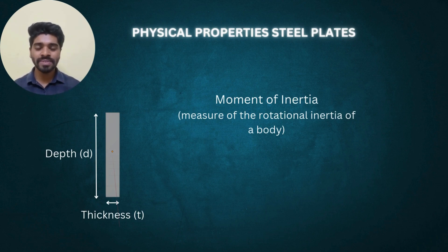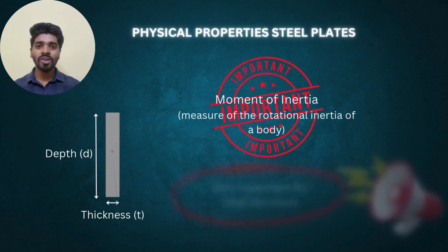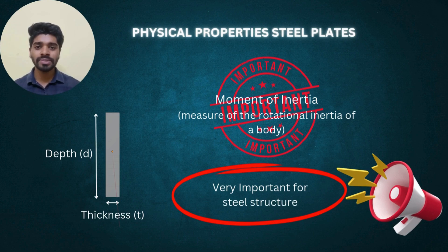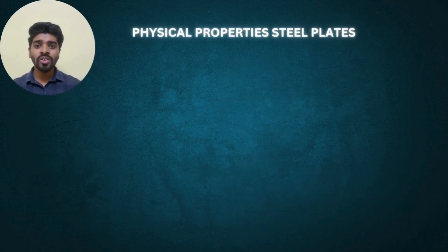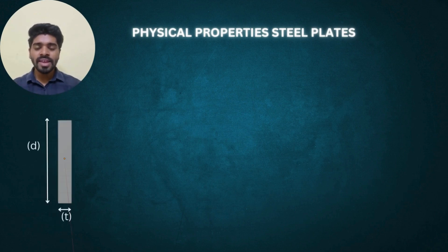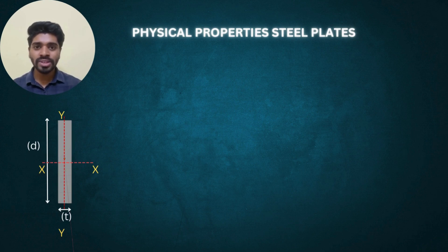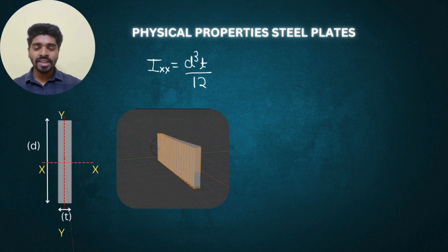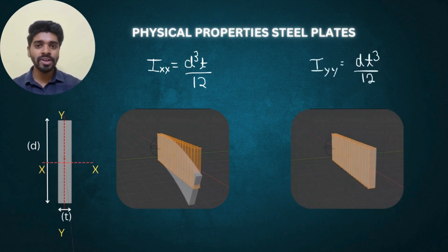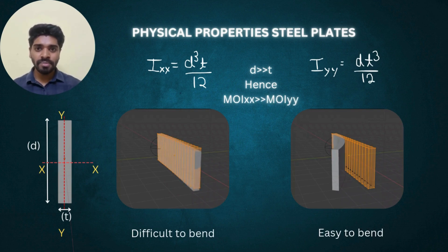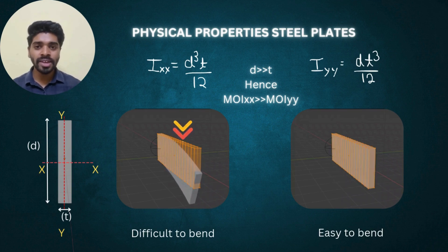Moment of inertia is nothing but the rotational inertia — it shows the stability and the forces needed to rotate it. Moment of inertia is going to be a widely used terminology in the whole steel industry, so it is a very important concept. We have two axes: the XX axis and the YY axis. The moment of inertia for the XX axis is Ixx = d³t/12, and for the YY axis it is Iyy = t³d/12. Since the depth is much larger than the thickness, Ixx will be very high — this is called the major axis.